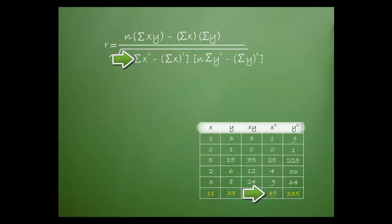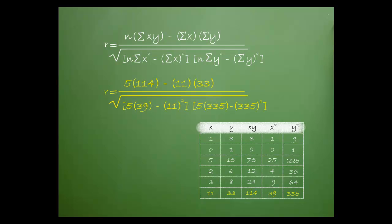This is the sum of our x squared values. This is the sum of the x values squared. n is equal to five. This is the sum of our y squared values. Finally, we need the sum of the y values squared. Let's fill in the formula with these values.